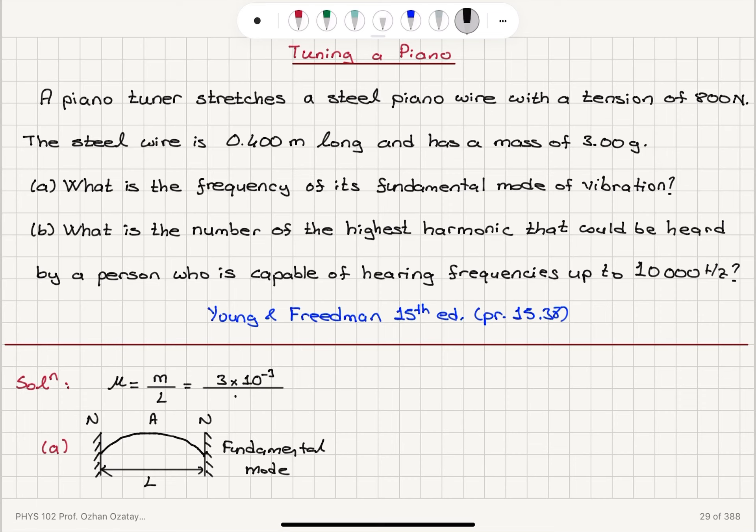The length of the wire is 0.4 meters. The tension is 800 newtons. So the propagation speed of sinusoidal waves on this wire would be the square root T over mu.